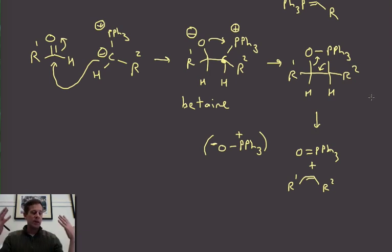Okay so that's the mechanism. We generate the ylid and then we basically do a very simple addition of the carbanion to the carbonyl and then the oxygen and phosphorus link up and then they're able to split apart. And oxygen and phosphorus love each other so that actually turns out to be a huge driving force for this process.